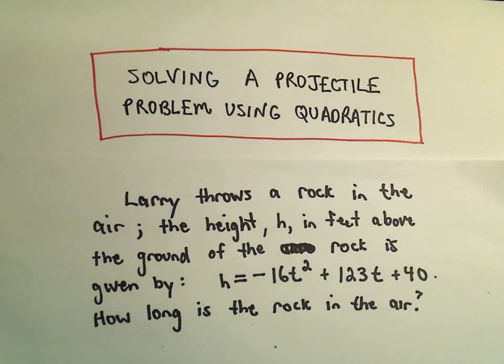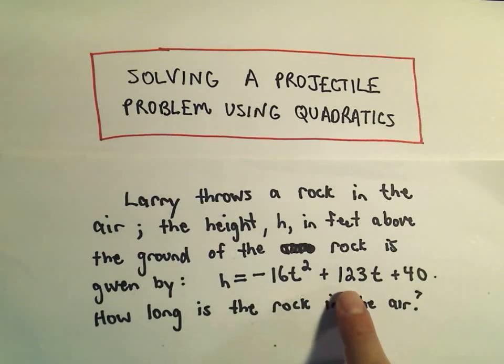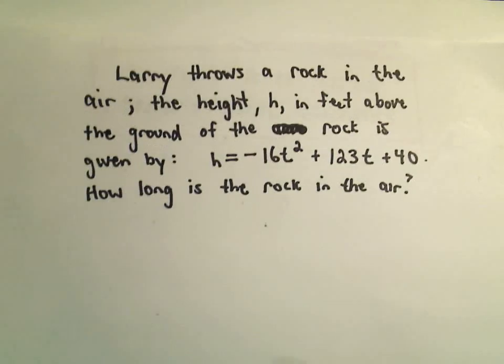So suppose we've got Larry and he throws a rock in the air. The height h in feet above the ground of the rock is given by the equation h equals negative 16t squared plus 123t plus 40, and we want to know how long the rock is in the air.